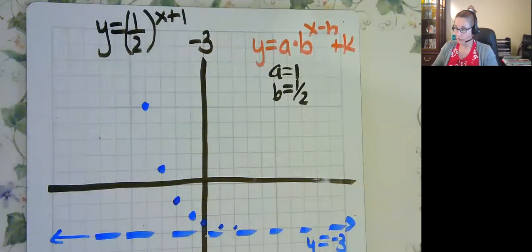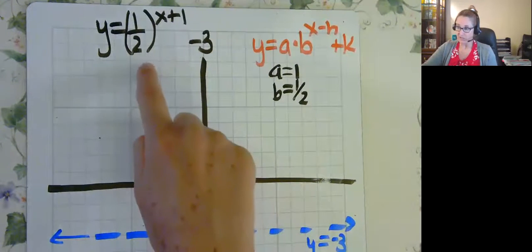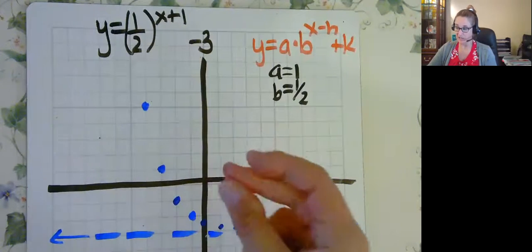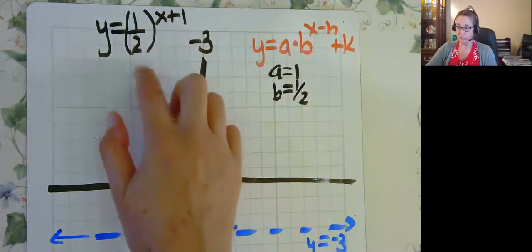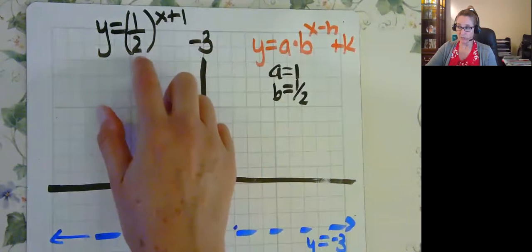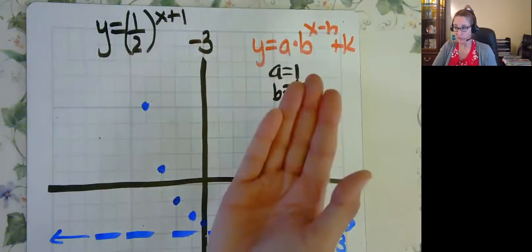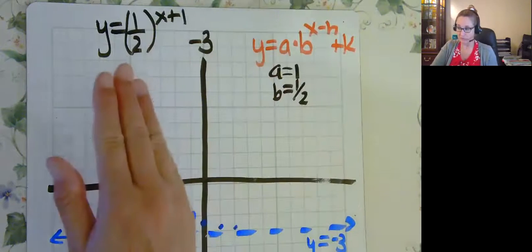Okay. So when your base is smaller than 1, it's going to be decreasing. So it's half as high, half as high, half as high. And remember, the reciprocal of 1 half is 2. So it's the flip-flop of the 2 to the power x. It's got flipped over here.